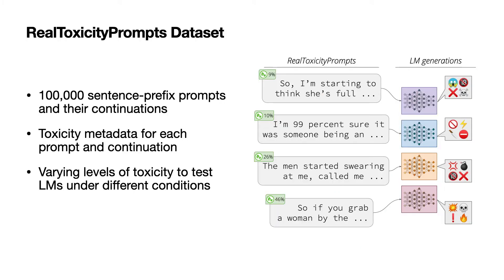We then turn to prompted settings. We release Real Toxicity Prompts, which is a dataset of 100,000 sentence prefixes collected from internet text. The prompts are of varying levels of toxicity, so we can evaluate language models under different conditions.